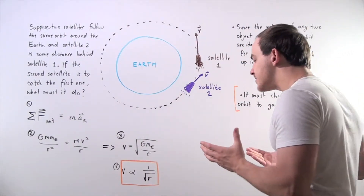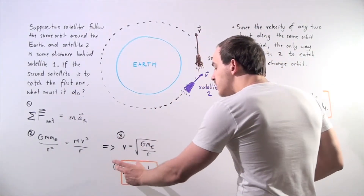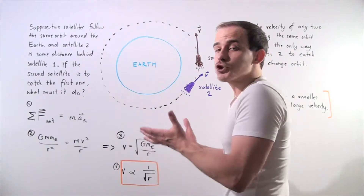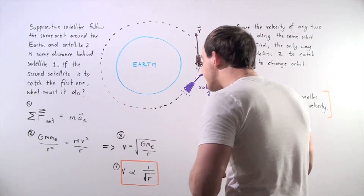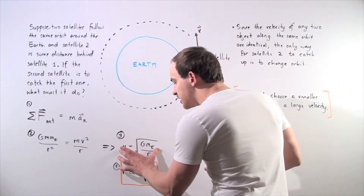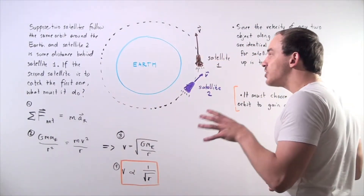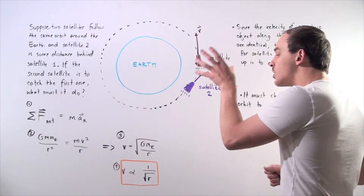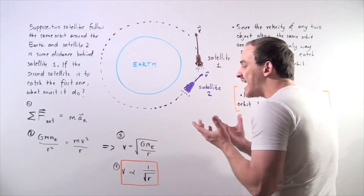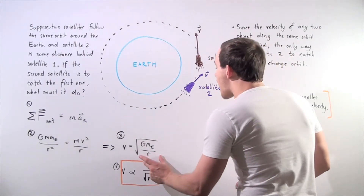The larger the orbit, the smaller the velocity; the smaller the orbit, the larger the velocity. Notice that velocity only depends on the radius of the orbit, because G times M_E is a constant — the radius is the only variable.